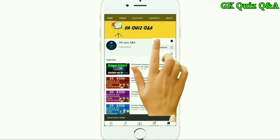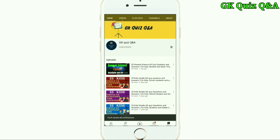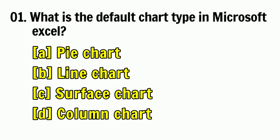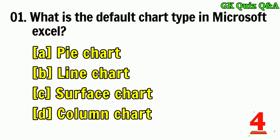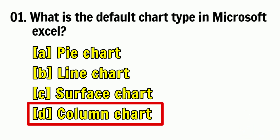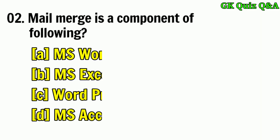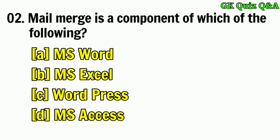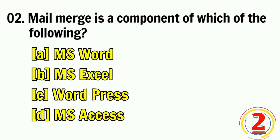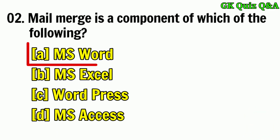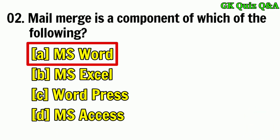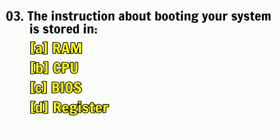What is the default chart type in Microsoft Excel? Answer: D — Column chart. Mail merge is a component of which of the following? Answer: A — MS Word.